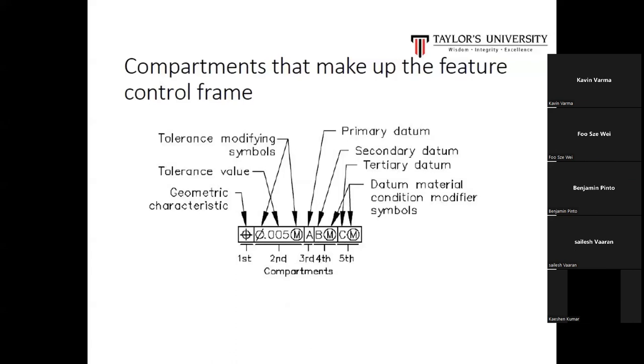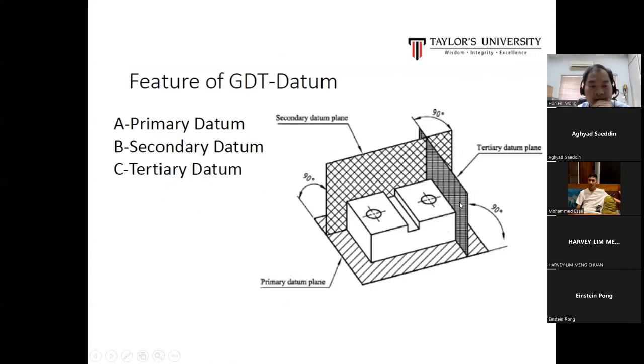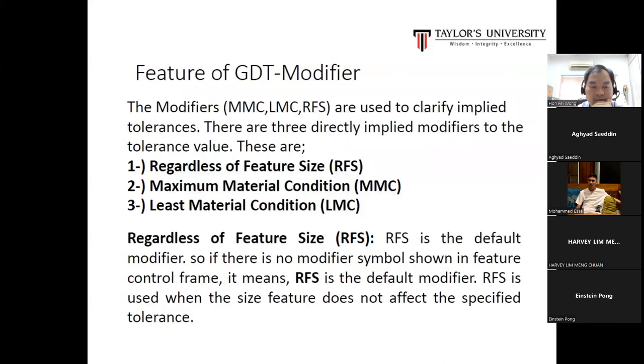So far, any questions? You can ask me, you can open your mind and ask me, no problem. Feature of GD&T: datum A is the primary, B is the secondary, C is the tertiary. There's one question: datum is a reference plane, right? Reference plane.